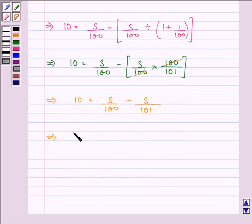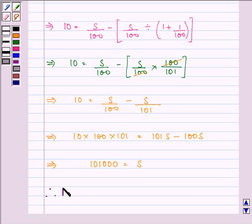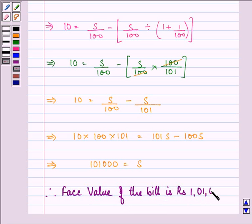Which on further simplifying gives us 10 into 100 into 101 is equal to 101S minus 100S. After taking LCM and further simplifying, so we have 101,000 equal to S. Therefore, face value of the bill is rupees 1,01,000.